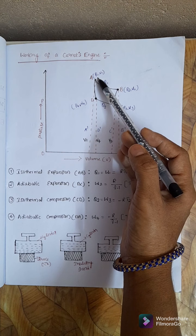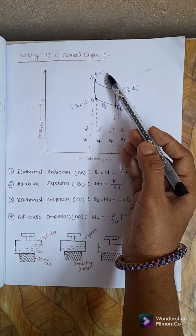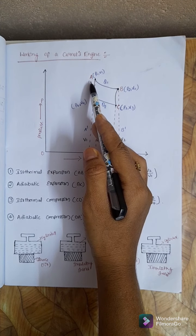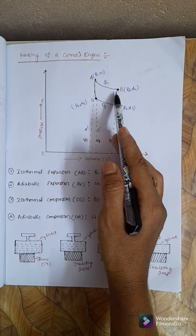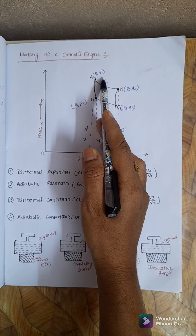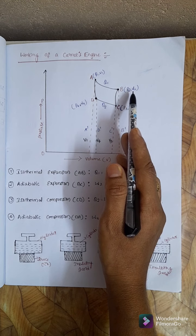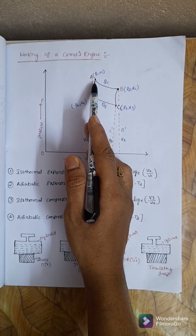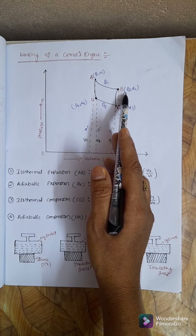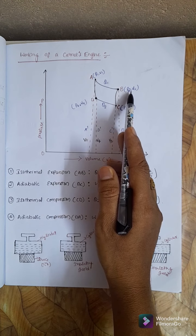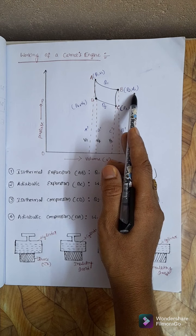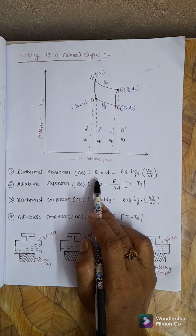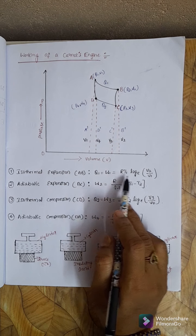At point A, the initial state of the gas has pressure P1, volume V1, and temperature T1. Isothermal expansion takes place from A to B, where at point B the pressure decreases to P2 and volume increases to V2. The working substance takes heat Q1 from the source and expands slowly from point A to point B. The curve AB shows isothermal expansion.